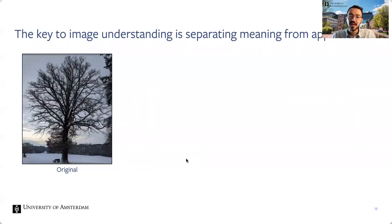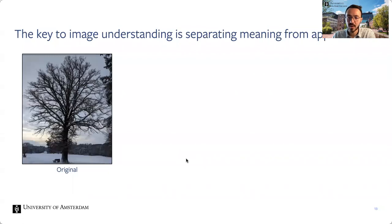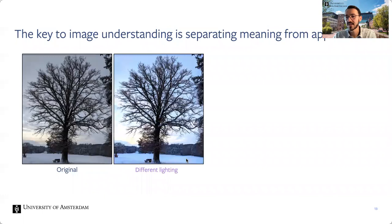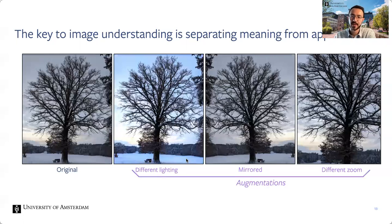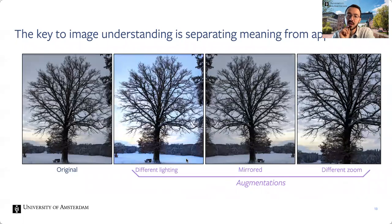For this, let's take a step back and think about what is required to understand an image. One necessity is separating meaning from appearance. For us humans this is easy — we see a picture of a tree. However, the CNN sees just pixel intensity values with no way to know what is important initially. But if we had different lighting conditions, the pixel values would change drastically while the meaning has not changed. The same goes for mirroring the image or using a different zoom level.